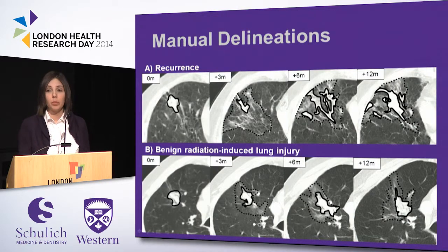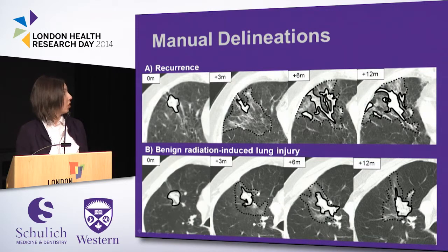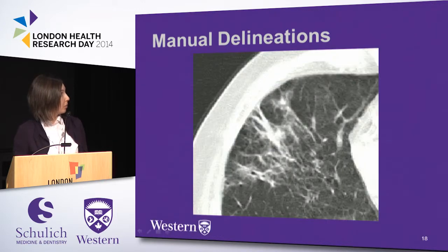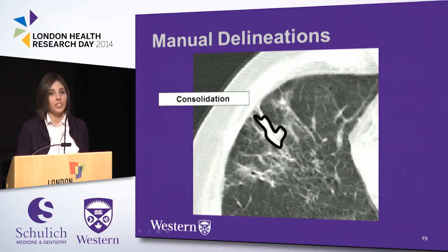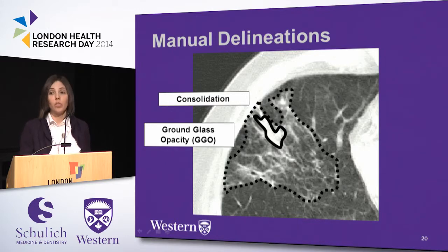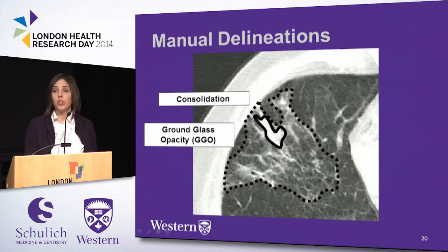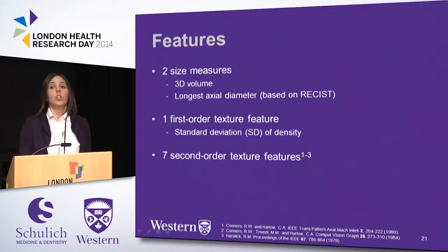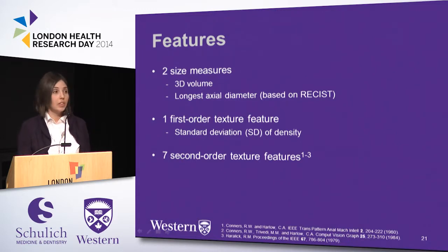We manually contoured any observable lung changes on all follow-up CTs, contouring two regions of interest as shown by the solid and dashed lines. The first is our consolidation region, defined as any dense mass without visible vessels beneath. The second is our ground glass opacity, or GGO, indicated by the dashed line, defined as an increase in lung density compared to normal while still being able to visualize the vasculature beneath. Within both regions, we calculated two size measures — 3D volume and the longest axial diameter — as well as one first-order texture measure and seven second-order texture features.